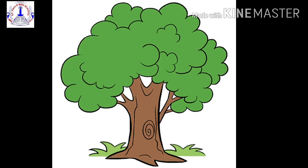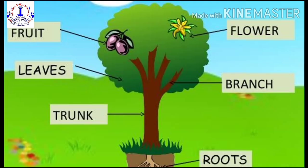Children, what do you see in this picture? Yes, it is a picture of a tree. You must have seen many trees around, right children? So you have to imagine a tree and answer a few questions. What are the different parts of the tree? Yes, the different parts of the tree are leaves, flowers, fruits, branches, trunk and roots.